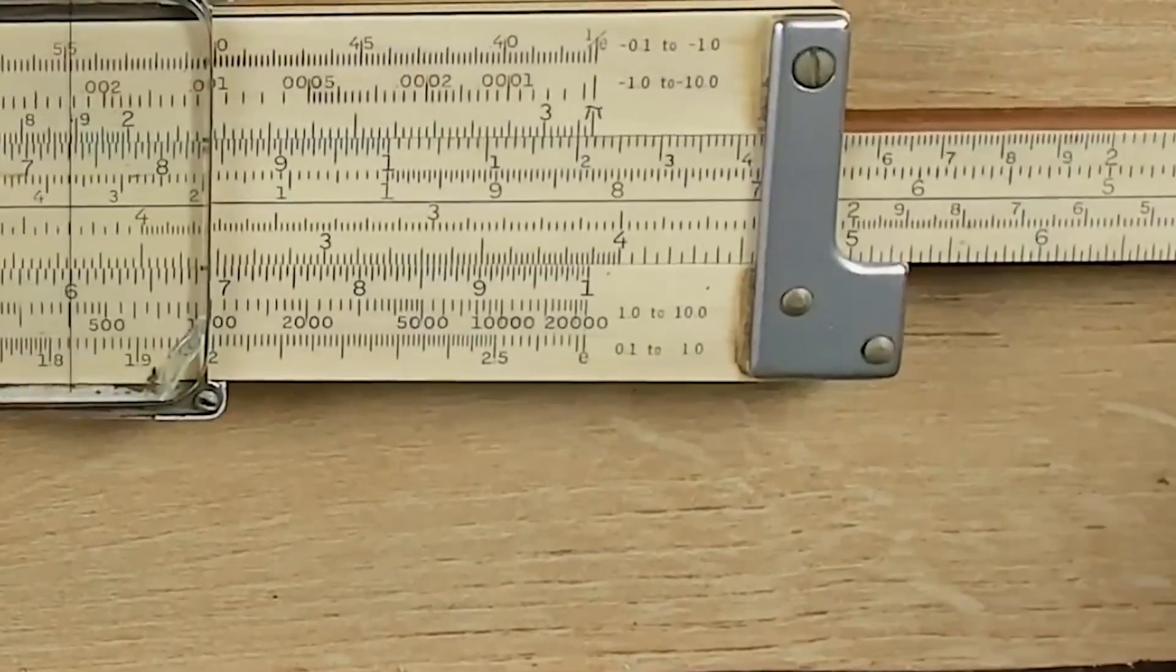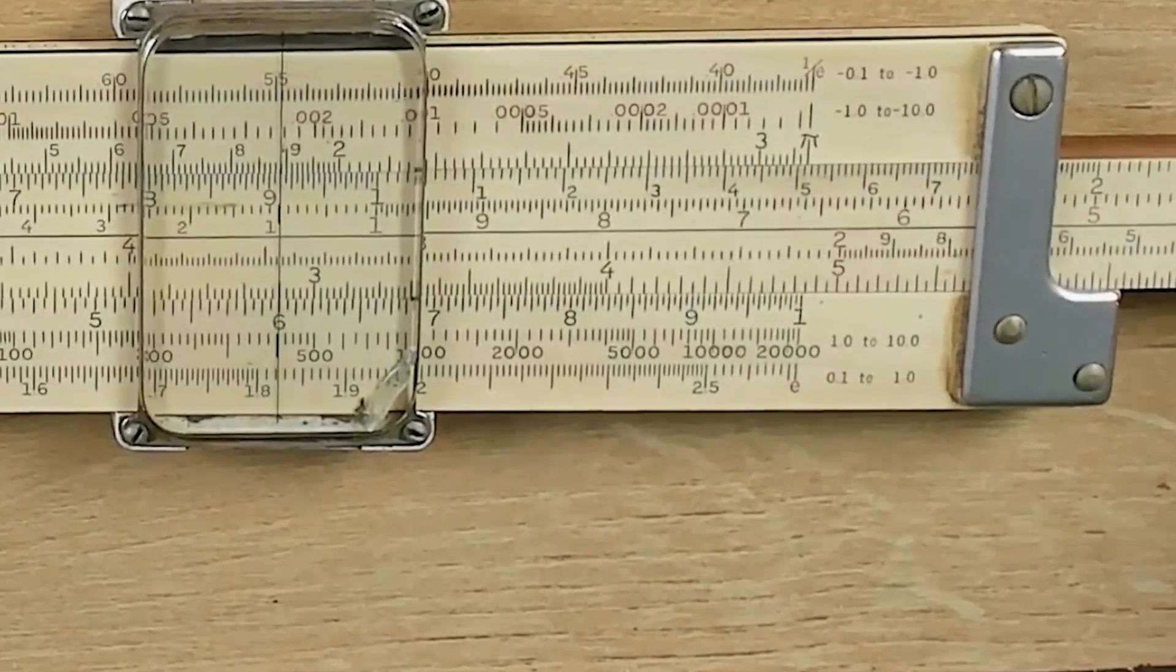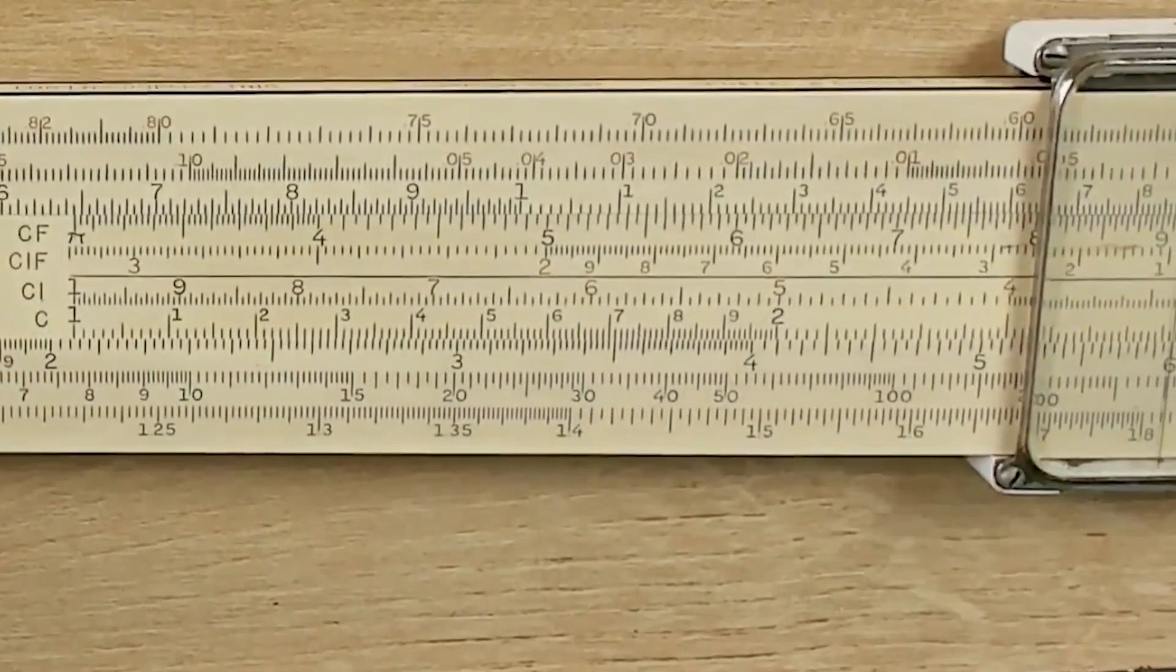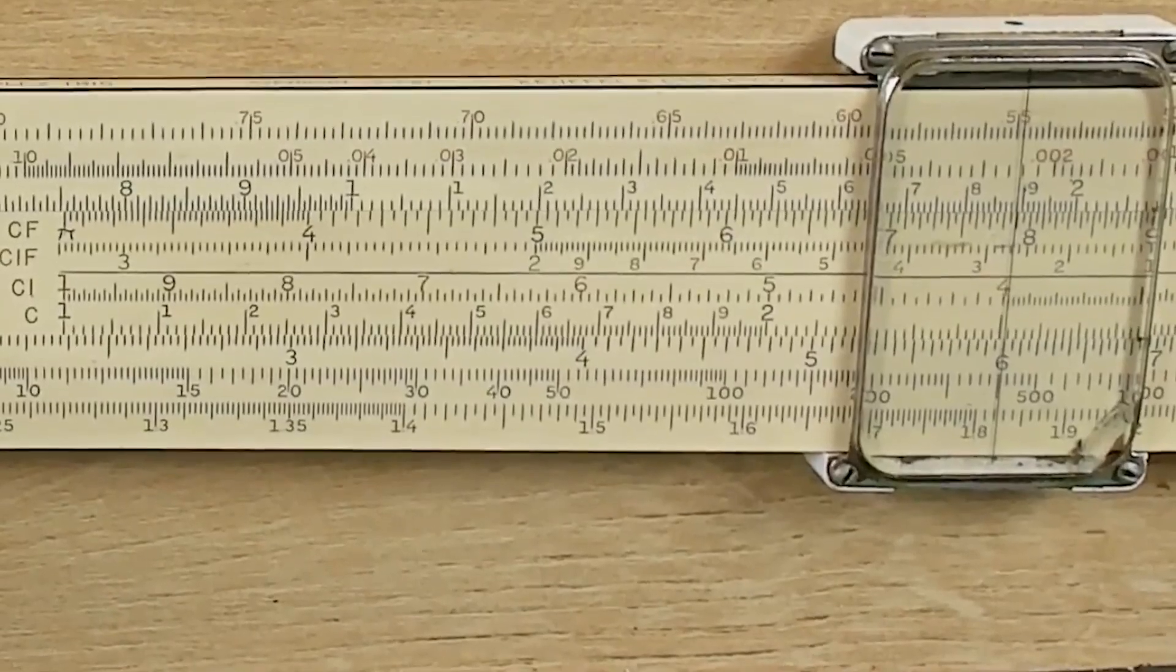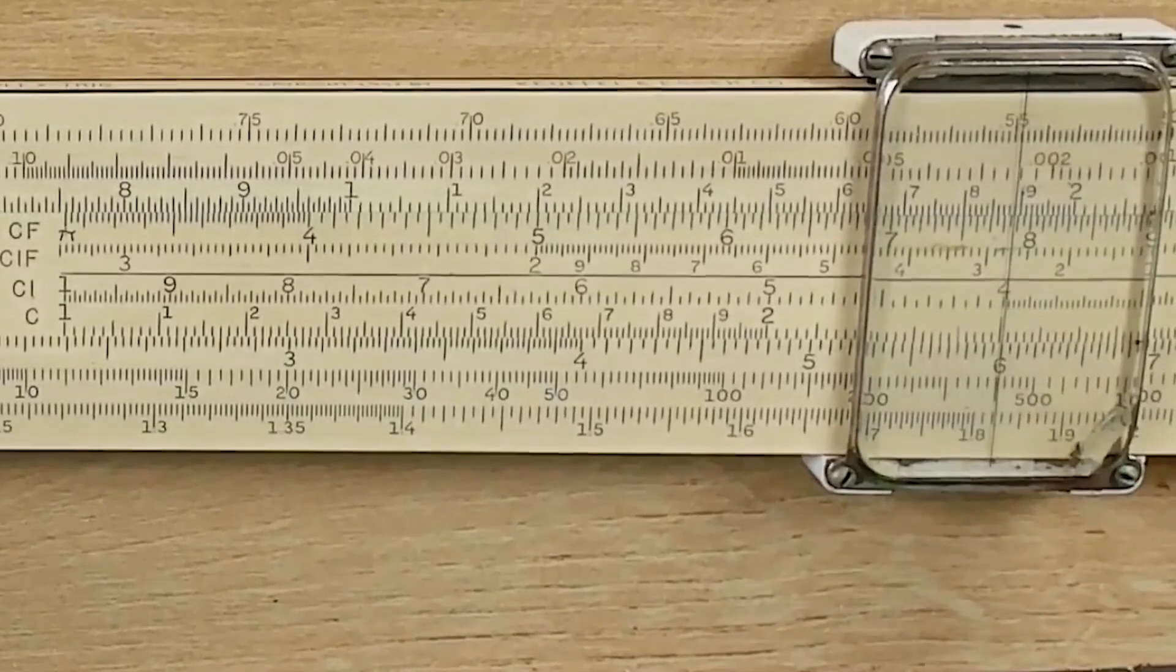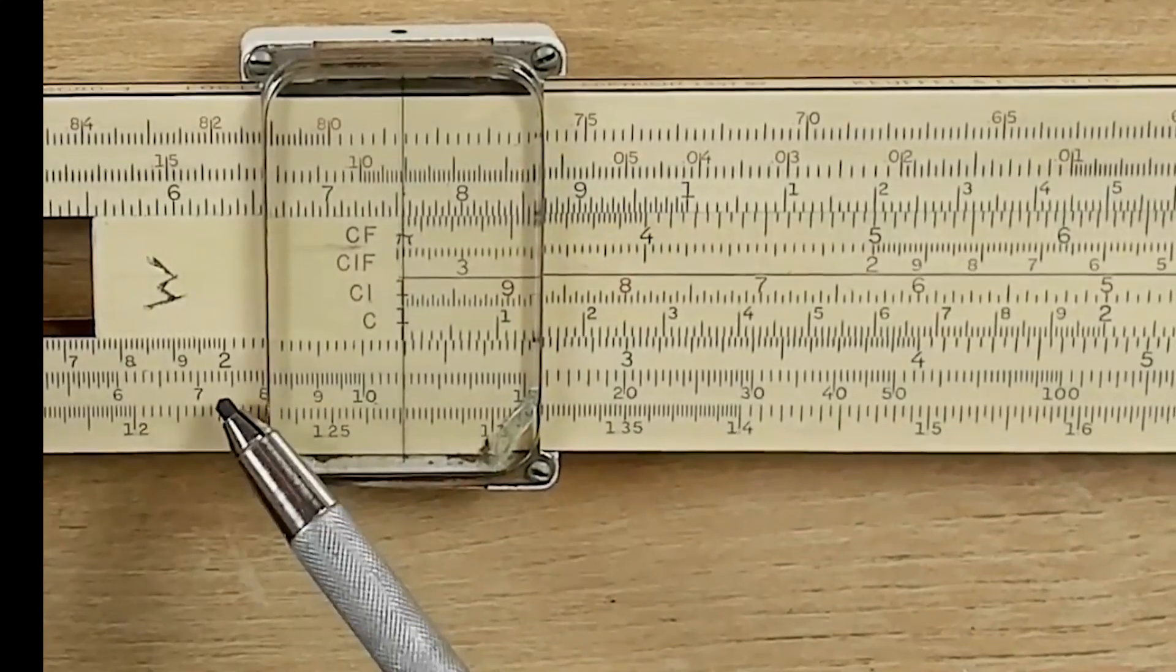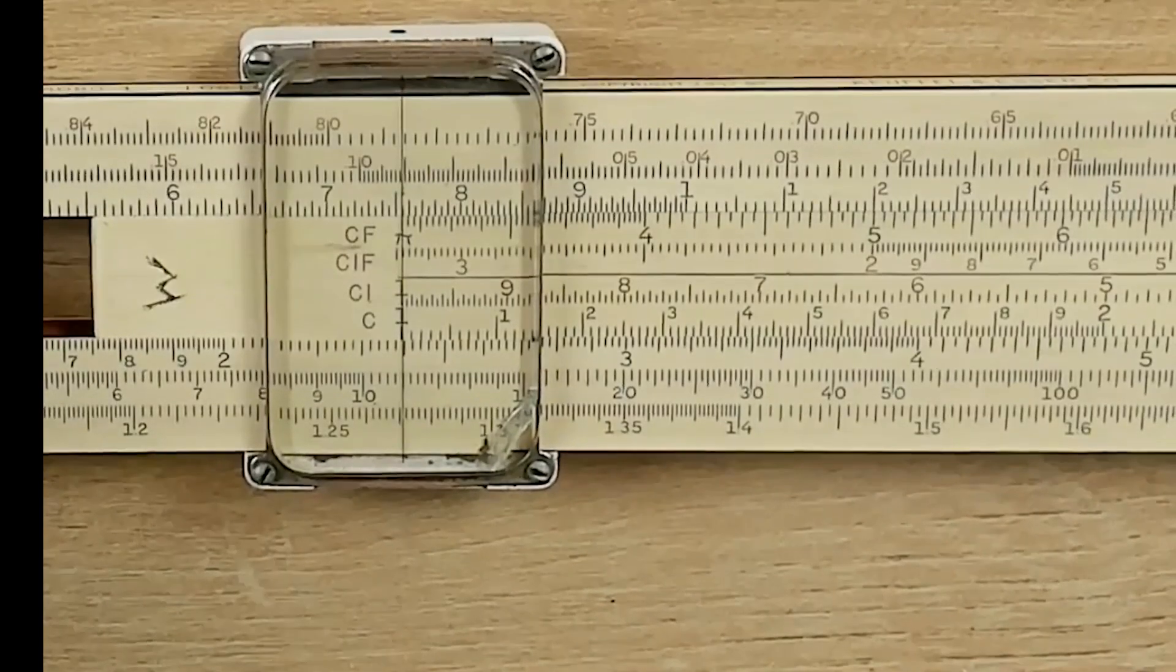So, one way that we could divide it by 1 over 4 using what's called the inverted scale, the CI scale, and the way that we would do that is we would find the 4 on the CI scale, put it directly over the 6, like any other division, and then read back to the index. Here's 2, here's 2.5, there's 2.4, or 24.